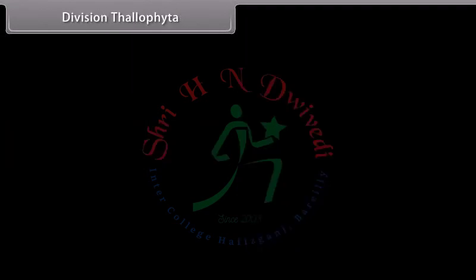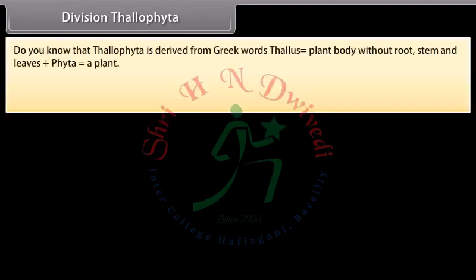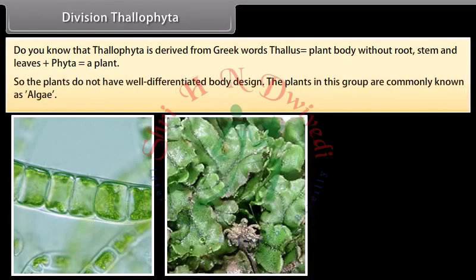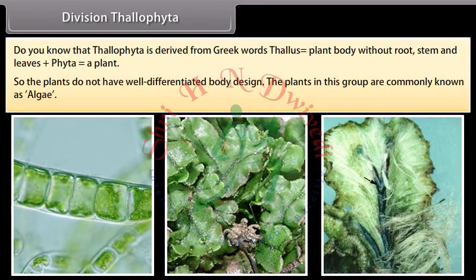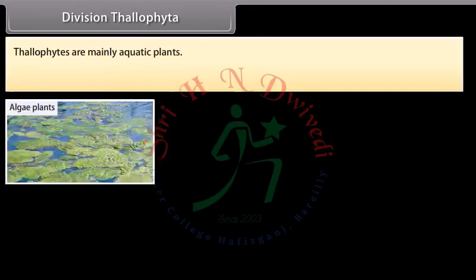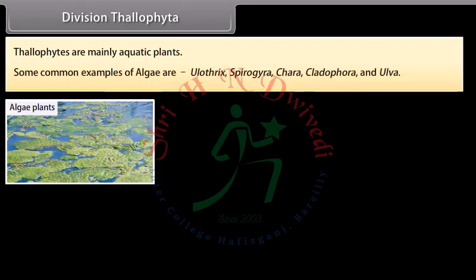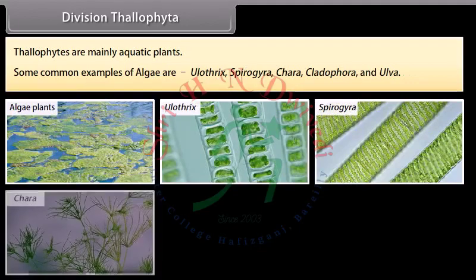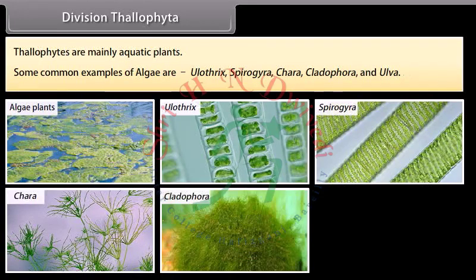Thallophyta is derived from Greek words 'thalus' meaning plant body without root, stem, and leaves, plus 'phyta' meaning a plant. So these plants do not have a well-differentiated body design. The plants in this group are commonly known as algae, and Thallophytes are mainly aquatic. Some common examples are Ulothrix, Spirogyra, Chara, Cladophora, and Ulva.